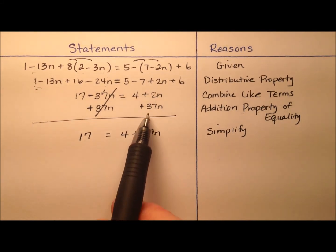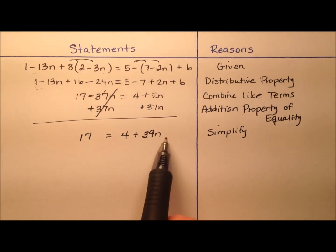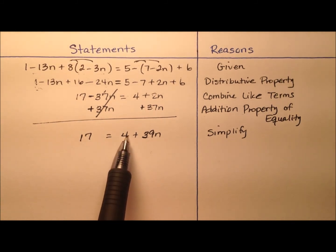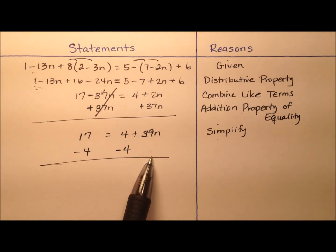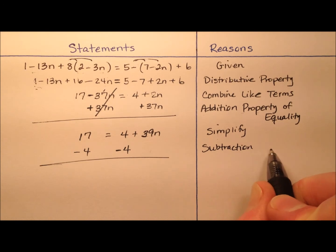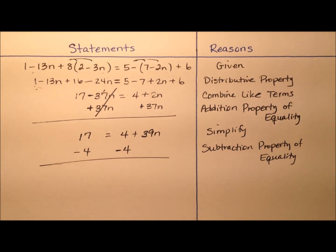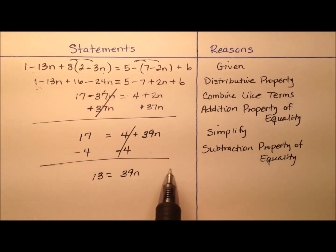Now we have 17 equals 4 plus 39n. The variable terms are together on the right, so we just need to move the 4 to the left with the 17. The 4 is positive, so we subtract 4 from both sides — that's the subtraction property of equality. Whatever we do to one side, we do to the other. The 4s cancel, and 17 minus 4 is 13, leaving us with 13 equals 39n. Then we simplify.